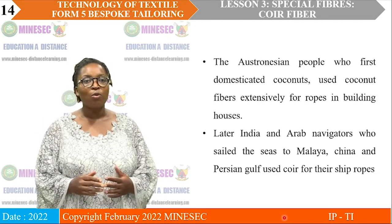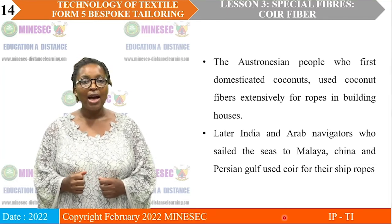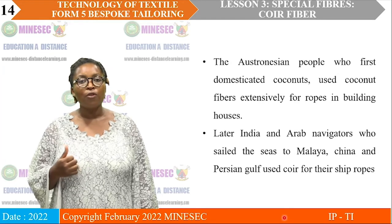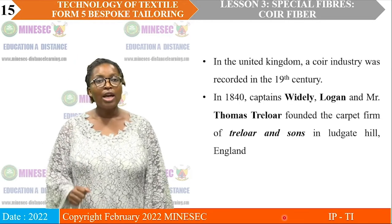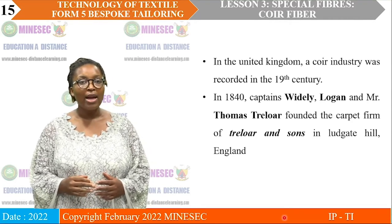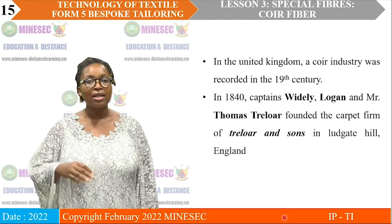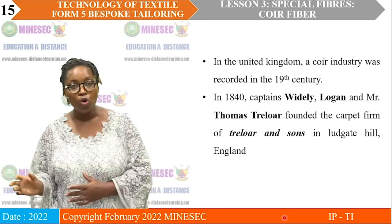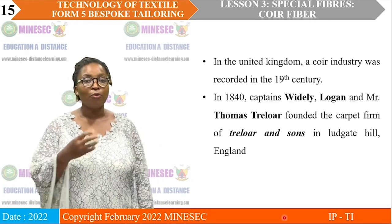Later, Indian and Arab navigators who sailed the seas of Malaya, China, and Persia used coconut fiber for their ship ropes. The main use of coconut fiber at that time was mostly for the fabrication of ropes and cords. In the United Kingdom, the Koi industry was recorded in the 19th century. In 1840, Captain Wiley Logan and Mr. Thomas Trello founded the carpet firm of Trello and Sons in Luggate Hill, England — transforming Koi fiber into carpets.